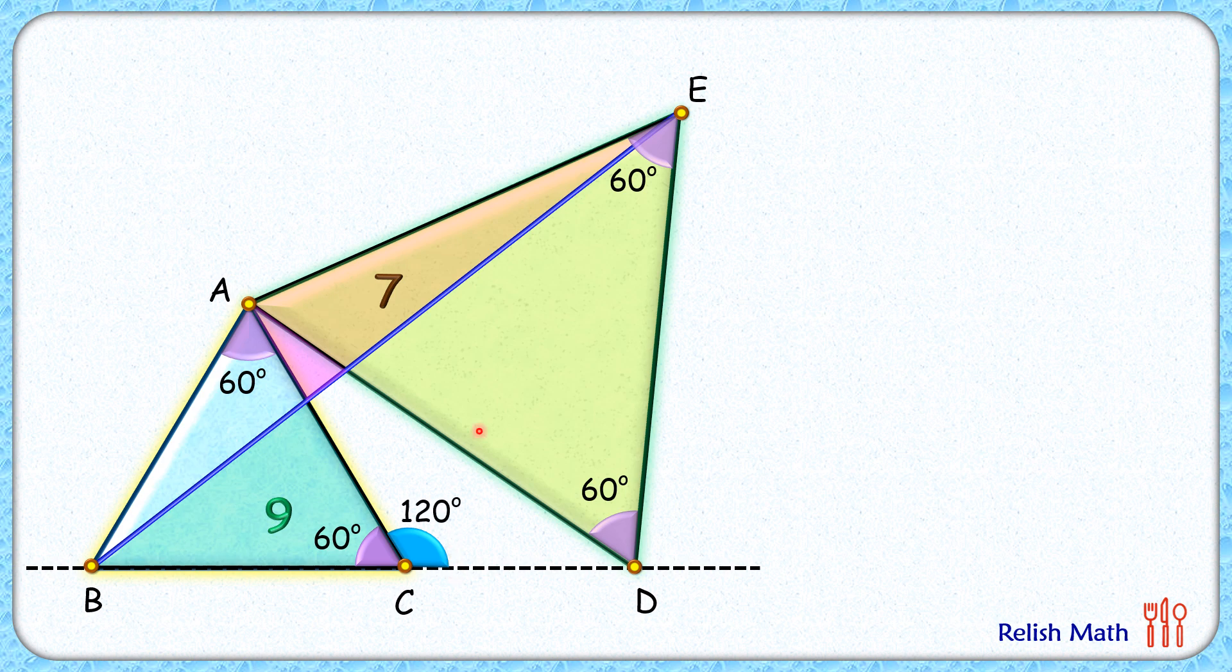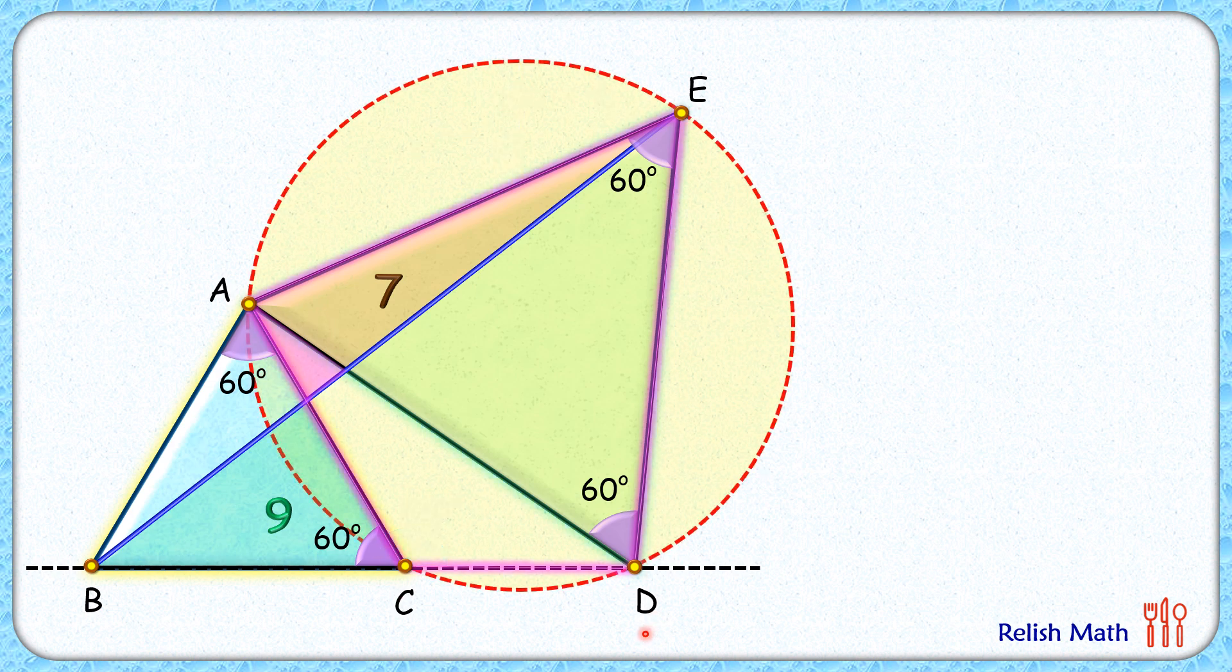Now if you can make an observation with respect to this pink triangle, angle E plus angle C is 180 degrees. And we know that in a quadrilateral, if opposite angles are supplementary, then it's a cyclic quadrilateral. Because it's a cyclic quadrilateral, we can draw a circle passing through all four vertices E, D, C, and A.